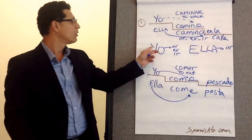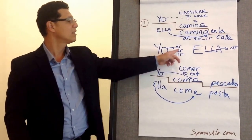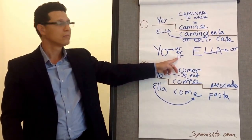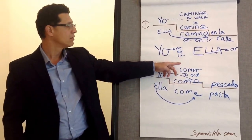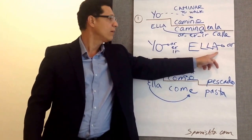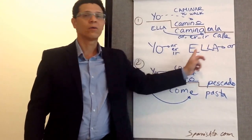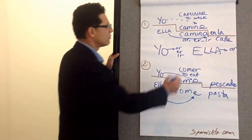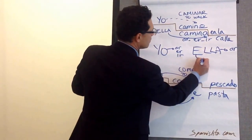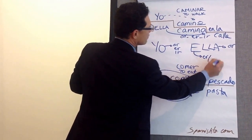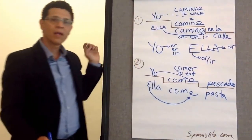Alright, so yo always ends in O for A-R and I-R. Ella ends in A for A-R, or E for E-R and I-R. Okay, gracias.